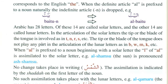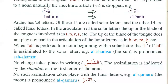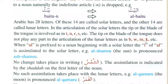In the articulation of the Solar letters, the tip or blade of the tongue is engaged, as in T and similar sounds. The tip or blade of the tongue does not play any part in the articulation of the Lunar letters.